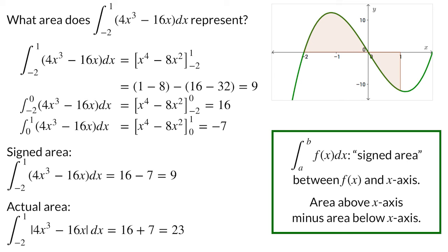If we want to calculate the actual area, we have to take the absolute value. The absolute value doesn't change the integral from negative 2 to 0, as the function is positive there. However, it multiplies the function by negative 1 for x between 0 and 1, changing the negative 7 to 7. The actual area between the curve and the x-axis is 16 plus 7, which is 23. In summary, the definite integral of a function f will give you the signed area between the graph of the function and the x-axis, subtracting area below the x-axis from the area above the x-axis. If you want the actual area, you need to take the absolute value, which requires finding where the function is negative and multiplying it by negative 1 in just those intervals. Even so, using a definite integral is a pretty nifty way to determine the area under a curve.